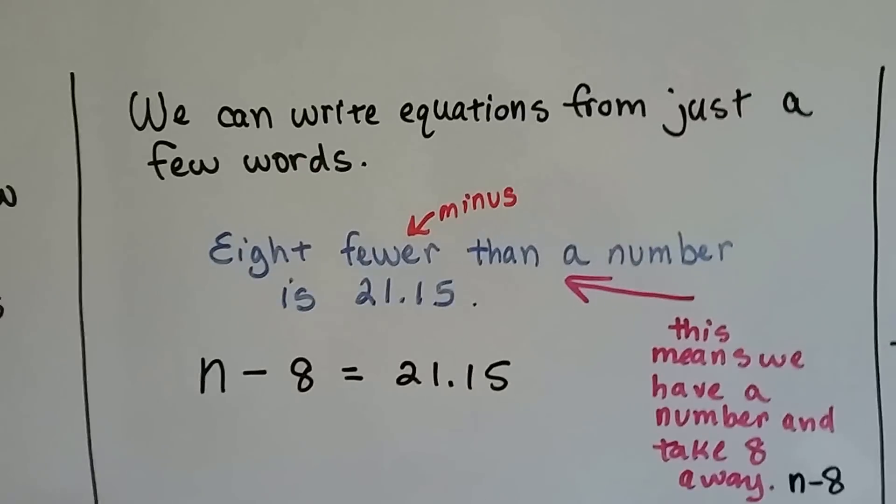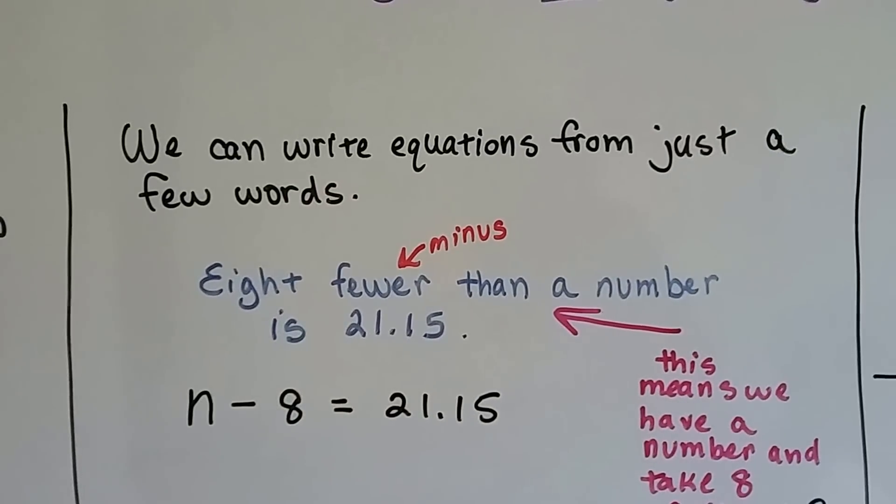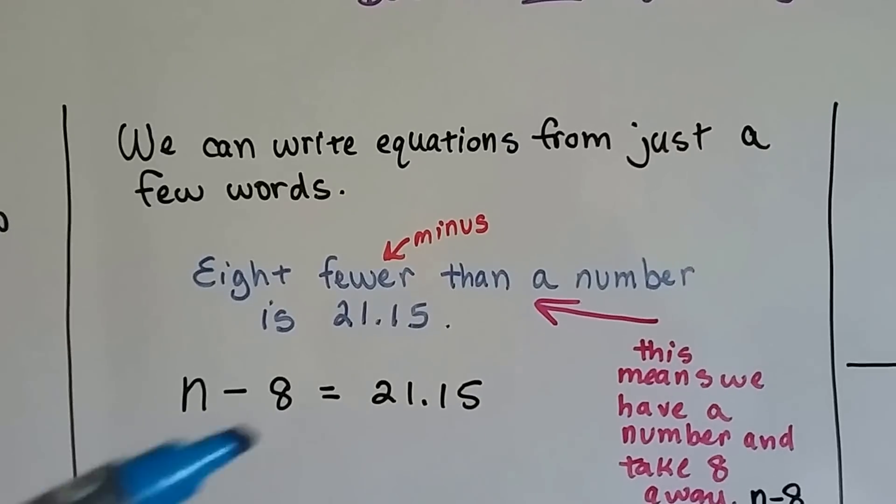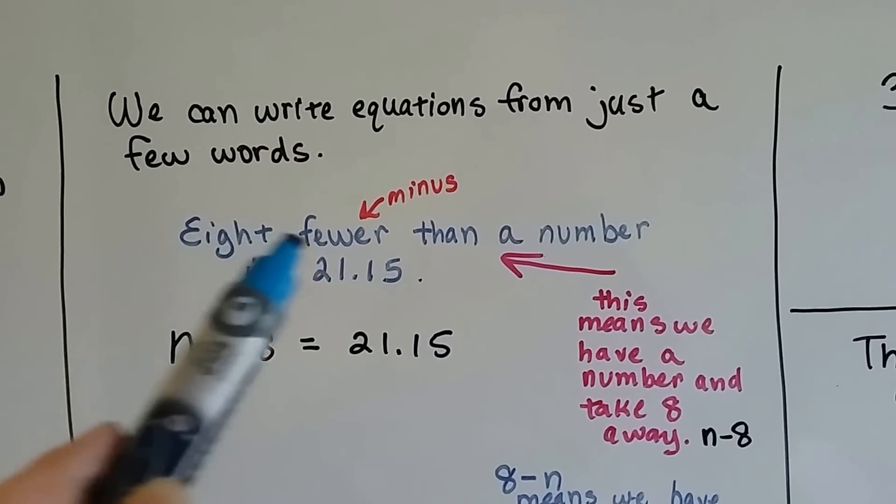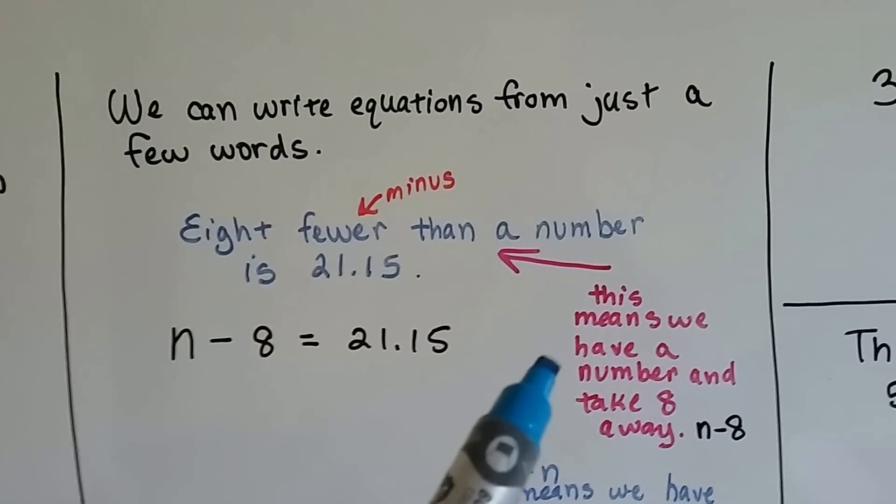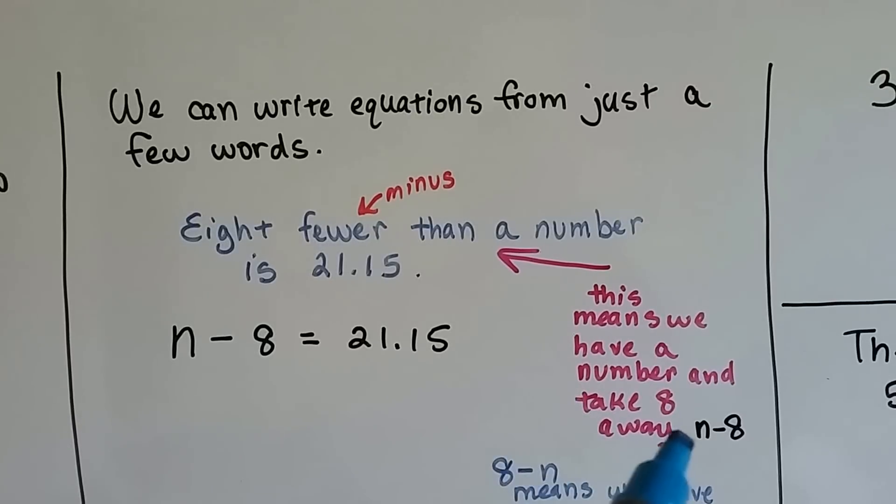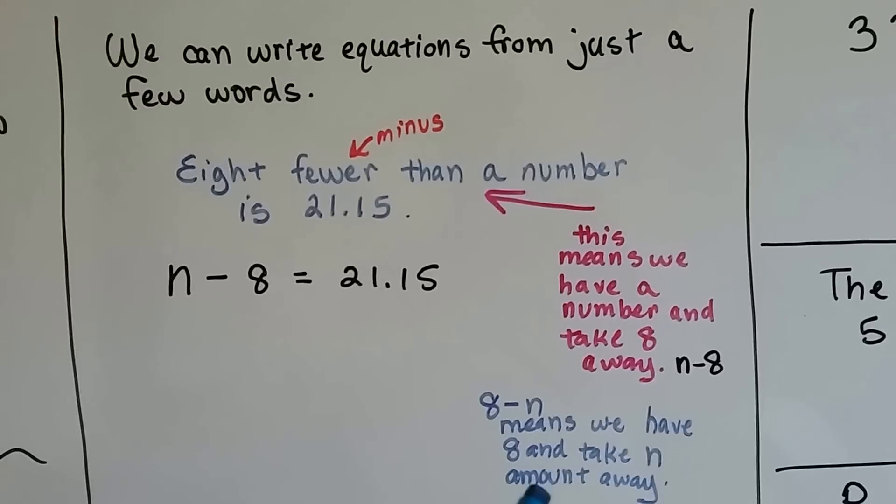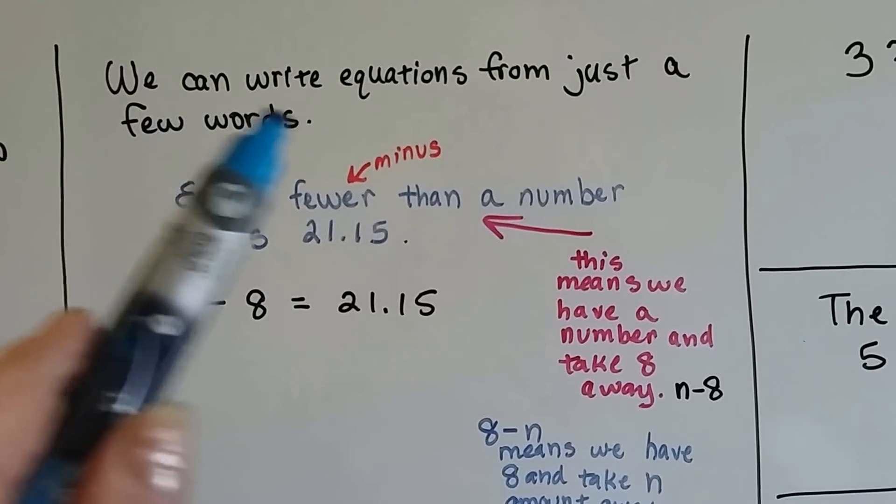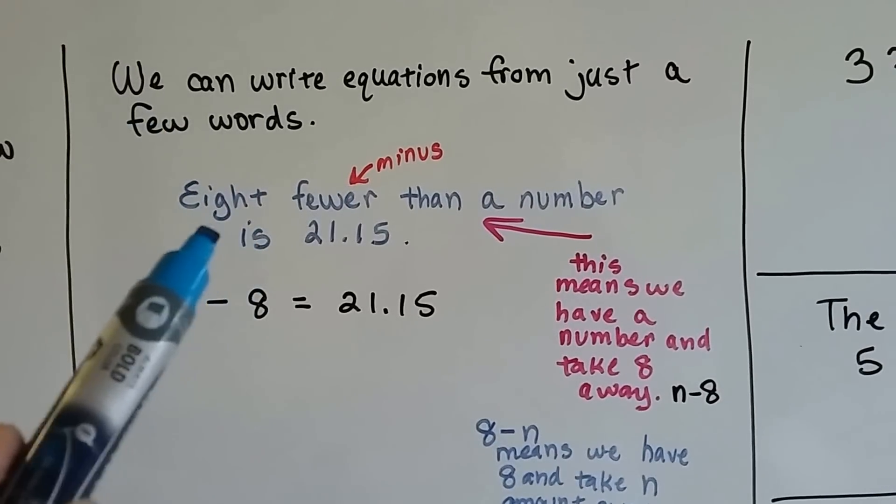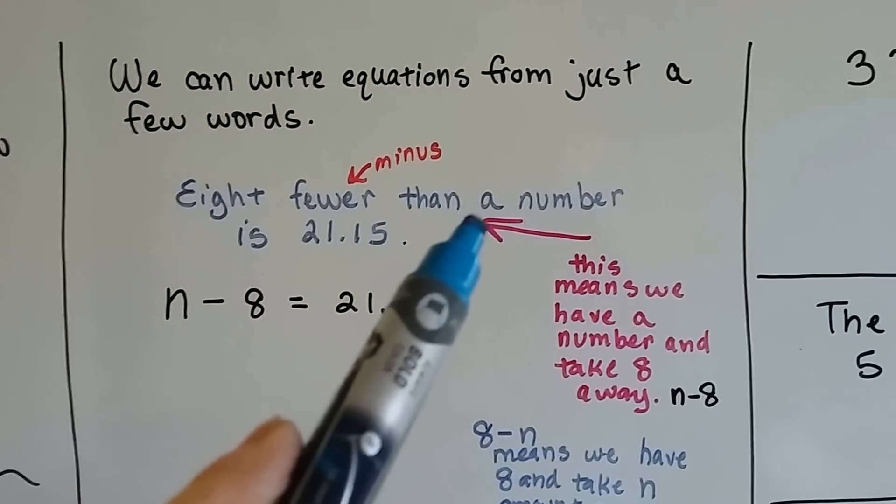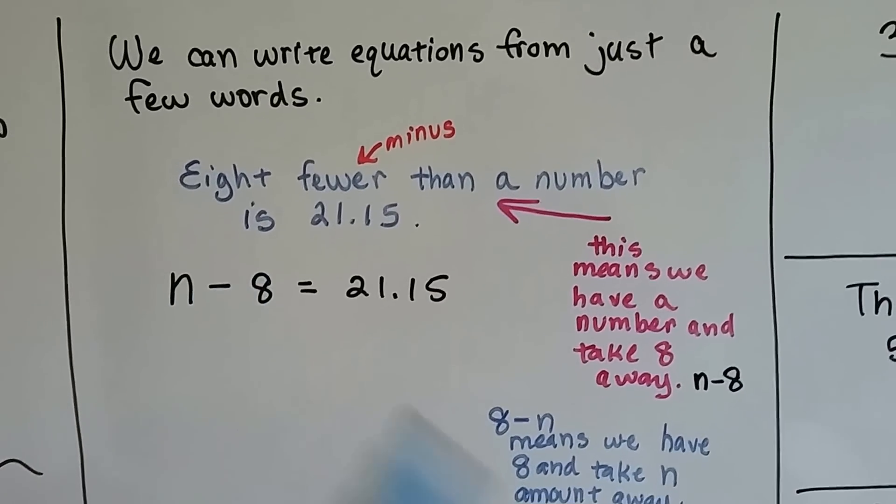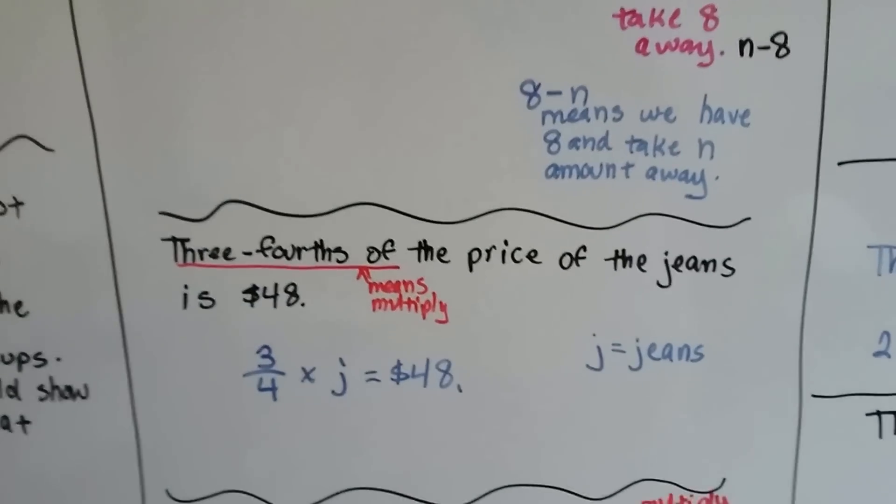We can write equations from just a few words. 8 fewer than a number is 21.15. The fewer tells us minus. Now, because it says 8 fewer than a number, this means we have a number and we're taking 8 away, n minus 8. 8 minus n means we have 8 and we're taking a number away. It doesn't say we're taking a number away. It says we have 8 fewer than a number. So, the number is first and then we take away the 8 that it's fewer. You got to be careful of the words.